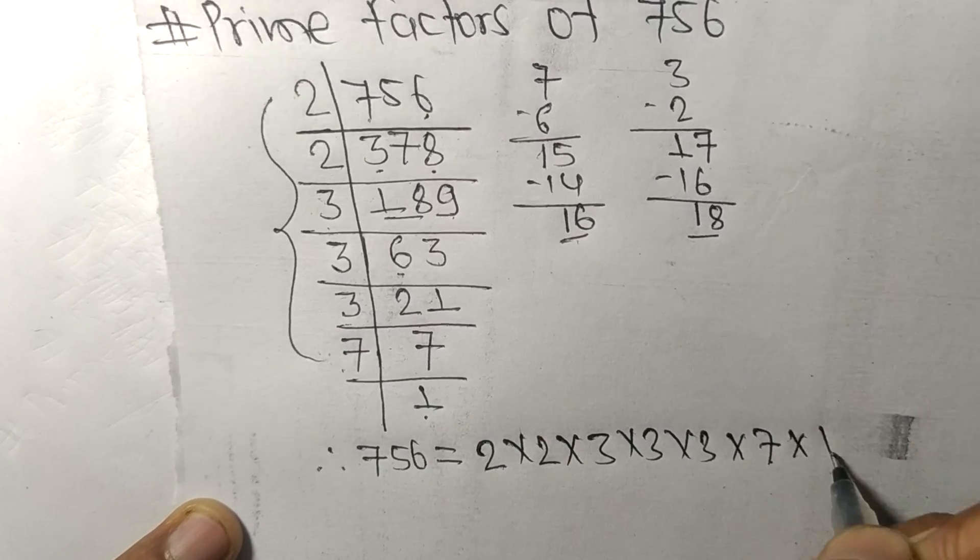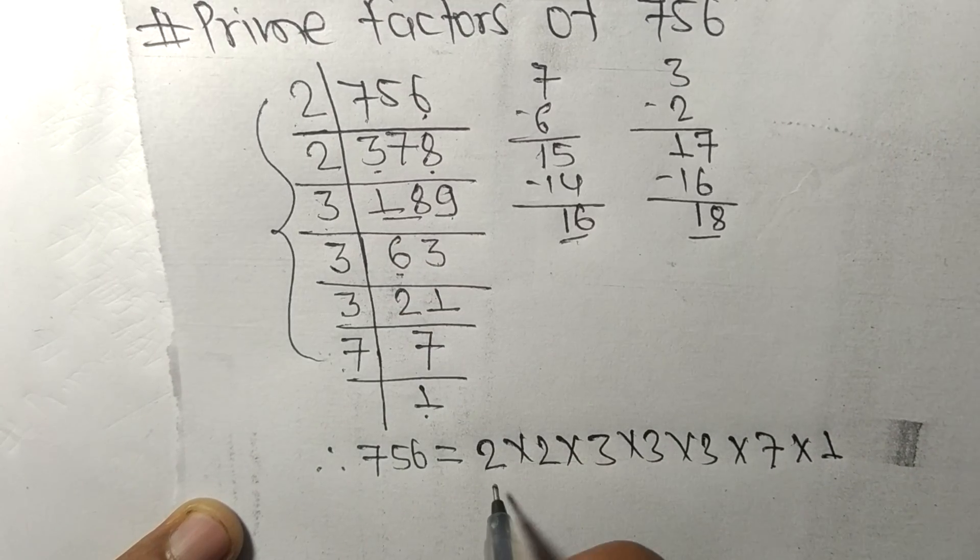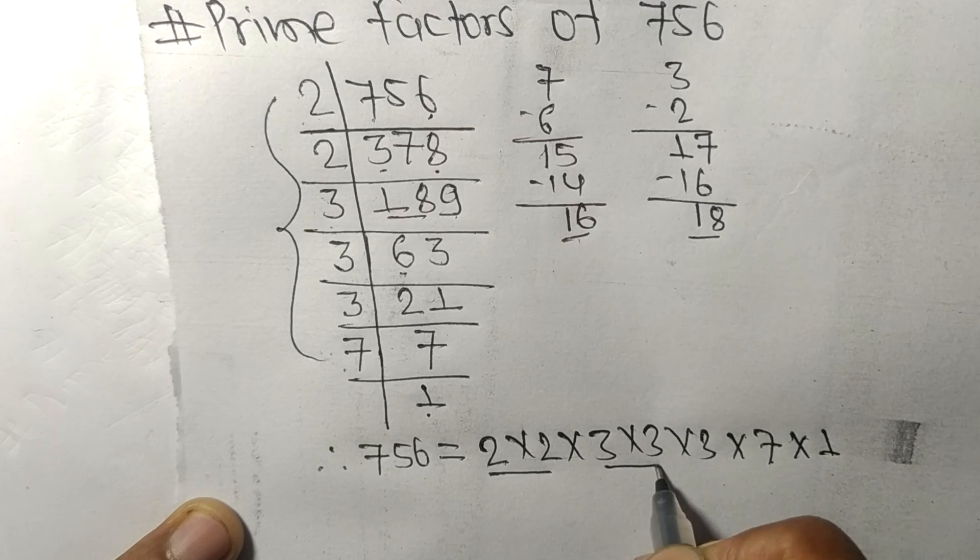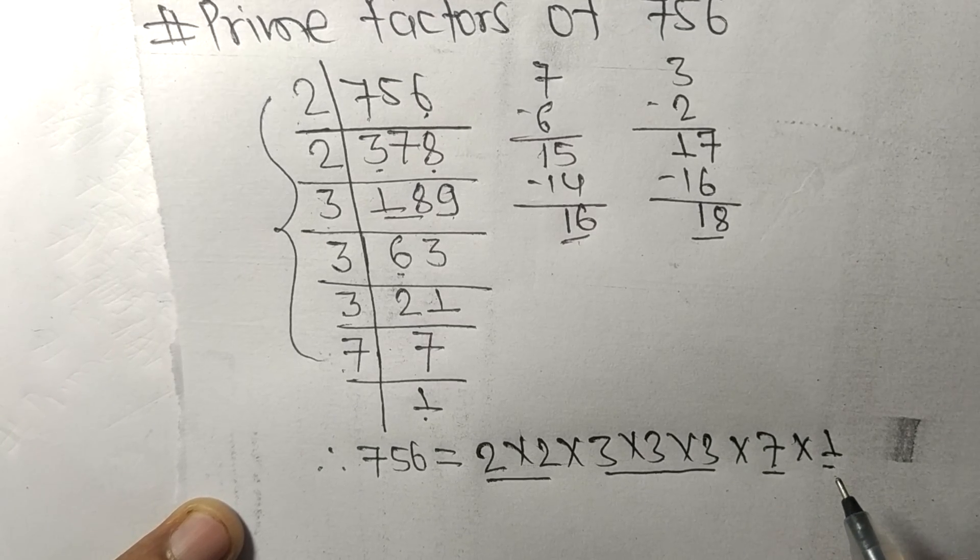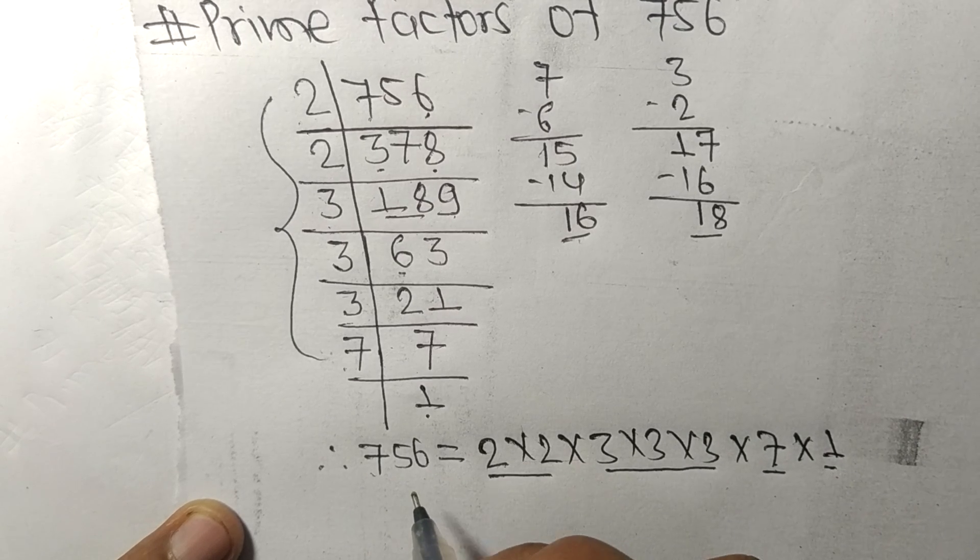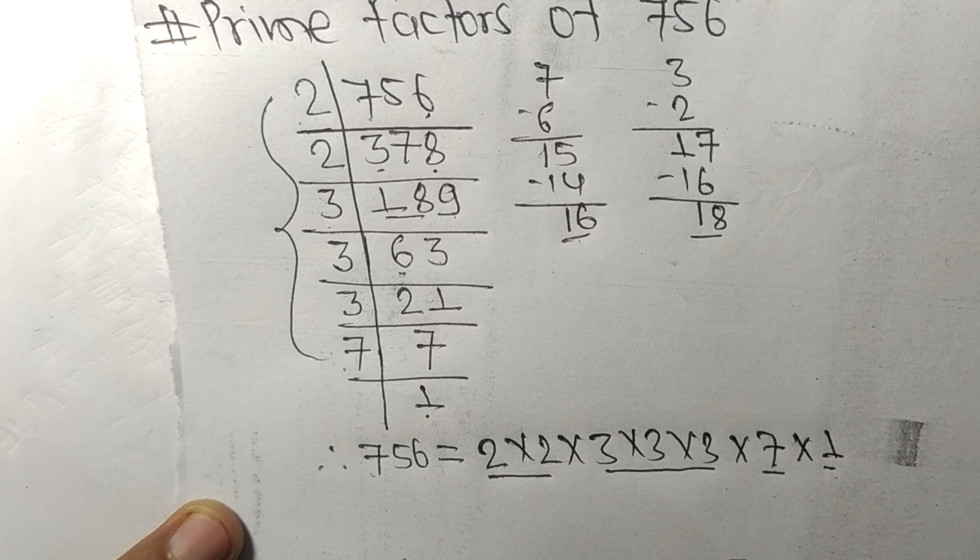From combining this we got this number. So 2, 3, 7, and 2, 2, 3, 7, and 1 are the prime factors of 756. That's all for today and thank you for watching.